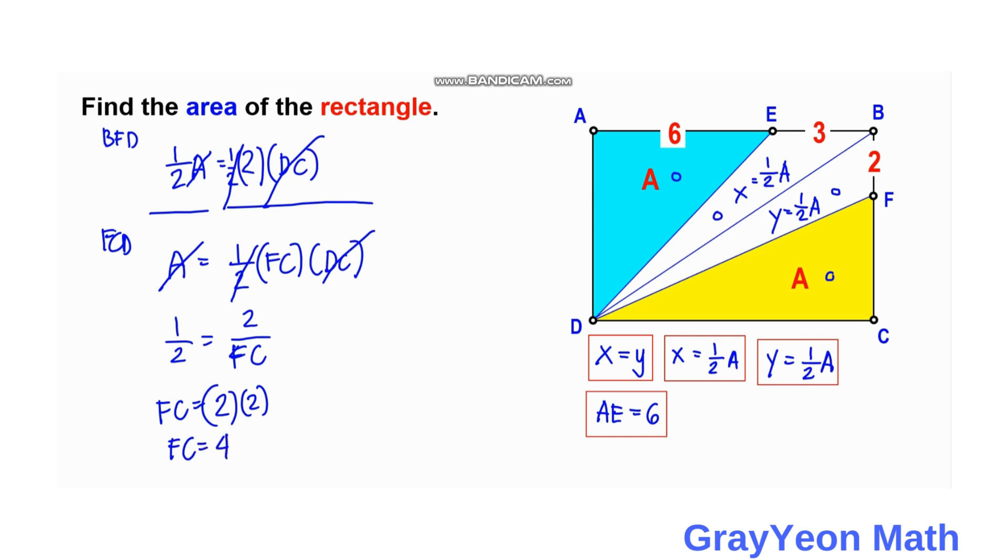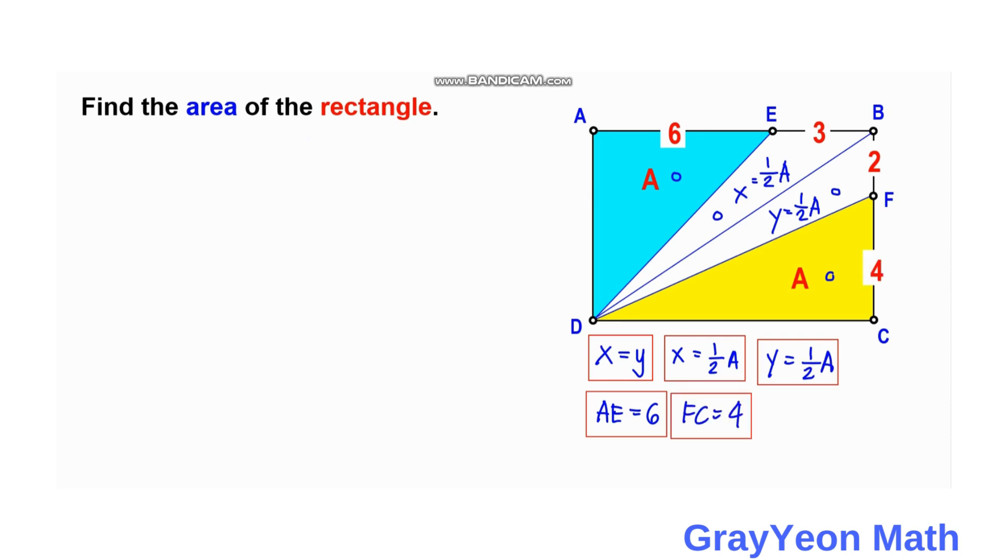So now for the final step, we can find now the area of ABCD. It is equal to length times width, but the length is we can say that this is AB, so that is 6 plus 3, times the height which is 2 plus 4. So area of ABCD equal to 9 times 6, or simply equal to 54 square units, and that is our answer.